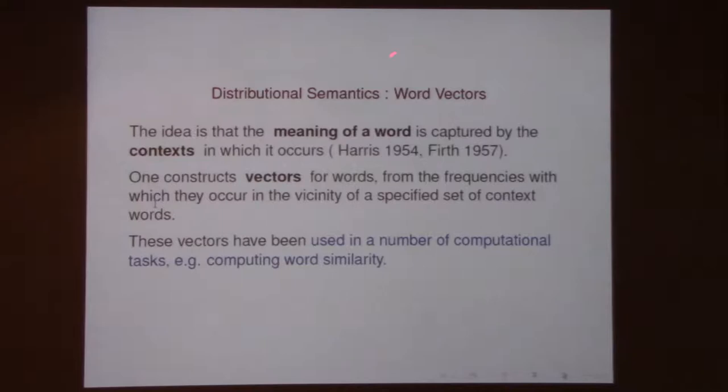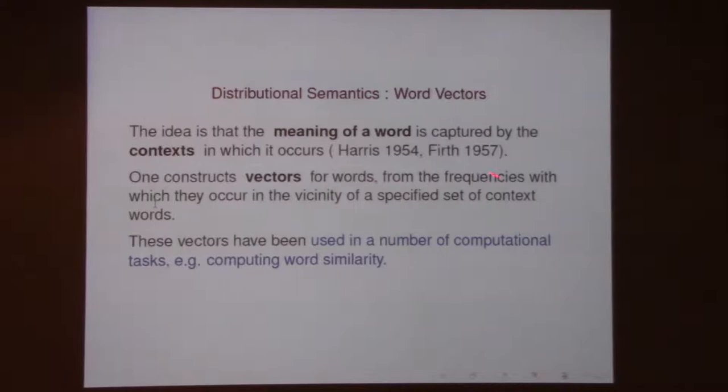So what is distributional semantics? The idea is that the meaning of a word is captured by the contexts in which it occurs. This idea was developed by linguists in the fifties. The way it works is that one constructs vectors for words by looking at the frequencies with which these words occur in the vicinity of a specified set of context words.